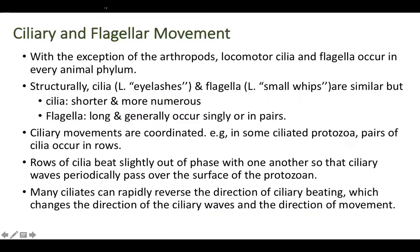The second type is ciliary and flagellar movements. Cilia are present in almost all kinds of cells, even in larger animals. Some stomach cells have cilia on them. Only arthropods do not use cilia for locomotion, but other than that, locomotor cilia and flagella are present in invertebrate phyla.